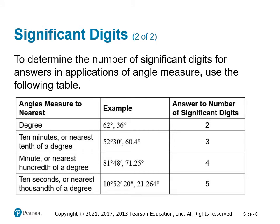When determining the number of significant digits for answers in applications of angle measure: if your angles are to the nearest degree, answer to two significant digits. To the nearest ten minutes or tenth of a degree, use three digits. To the nearest minute or nearest hundredth, use four significant digits. To the nearest ten seconds or nearest thousandth of a degree, use five digits. Significant digits are much more prevalent in chemistry; you'll have more instruction in those courses.